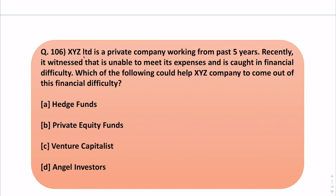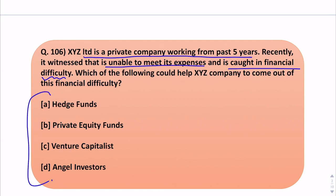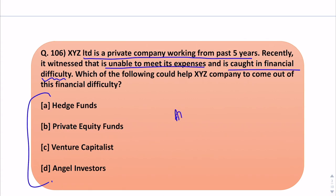The question says XYZ Limited is a private company working from the past five years. Recently it witnessed that it is unable to meet its expenses and is caught in financial difficulty. Which of the following could help XYZ company come out of this financial difficulty? Four kinds of funds have been given, and we will be discussing the aim of each fund in the next slide.